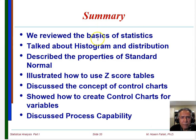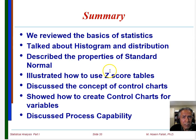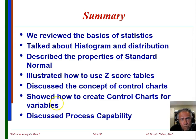In summary, I reviewed basic statistics, talked about histogram and distribution and how we use the histogram to determine the functional form of the distribution — ideally normal. We discussed the properties of the standard normal, used Z-scores to transform any normally distributed variable to the standard normal, and used the Z-score table to calculate chances and probabilities. We also covered how to create control charts for variables and discussed process capability. Thank you for watching. I will come back next to talk about control charts for attributes.